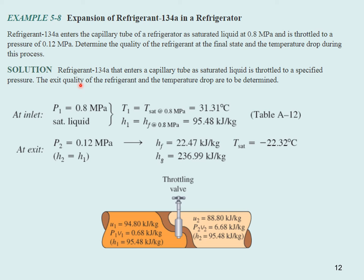Example 5.8: Refrigerant R134a enters a capillary tube of a refrigerator as a saturated liquid at 0.8 megapascals and is throttled to a pressure of 0.12 megapascals. Determine the quality of the refrigerant at the final state and the temperature drop during this process. At the inlet, it's a saturated liquid. P1 is 0.8 megapascals. We can look up the saturation temperature. From table A12, we can find HF at that value. At the exit, it's throttled to 0.12 megapascals. In a throttling situation, H1 equals H2. So H2 equals 95.48.